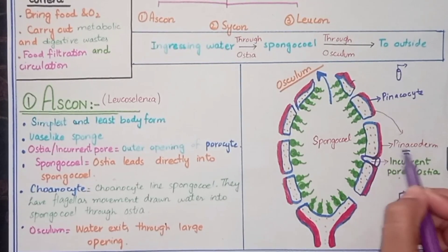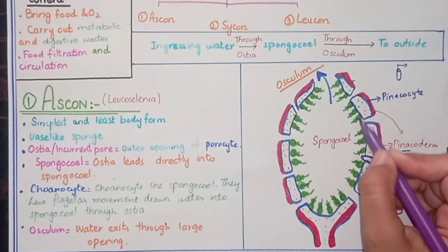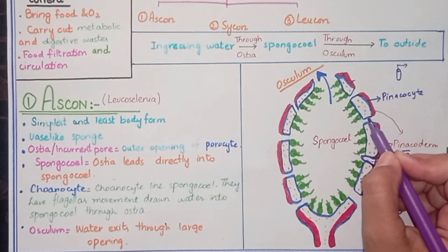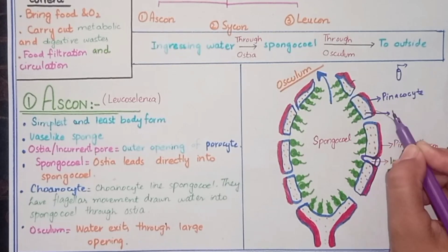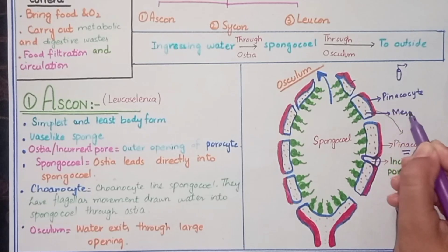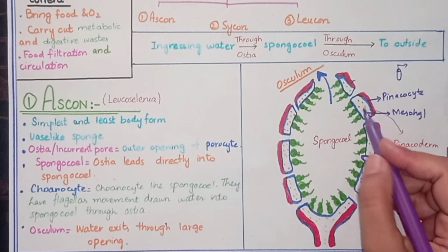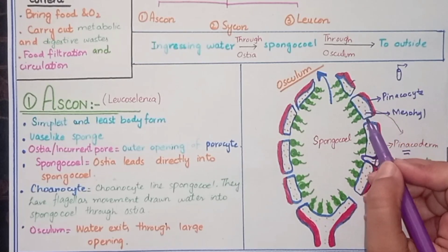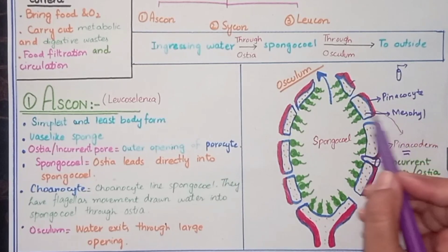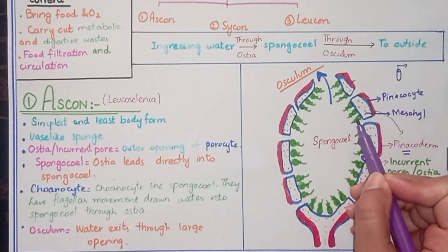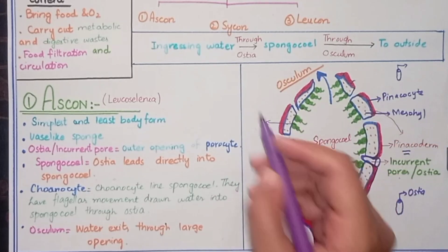Next to the Pinacoderm and Pinacocytes, there is a jelly-like material present which is known as Mesohyle. Mesohyle contains different types of nutrients.